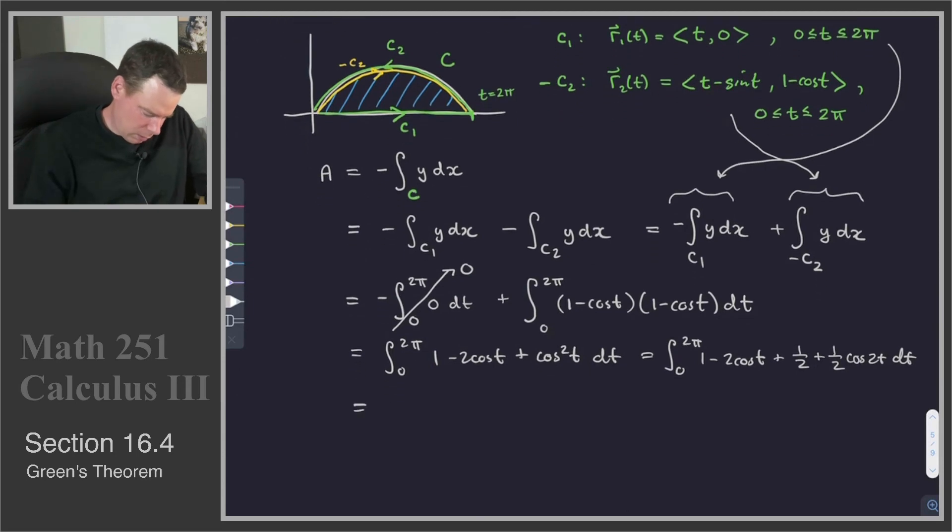Which means I can continue on and just do a little bit of simplification. So I've got 1, 1/2. So that becomes a 3/2. I've got a minus 2 cos t. And then I've got the 1/2 cos 2t dt. These are all things we can now integrate. So we get a 3/2 t.